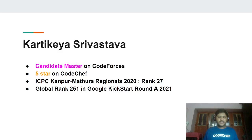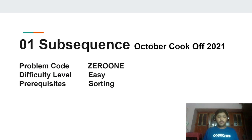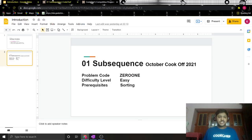Hello everyone, this is Karthikish Ravastav. I am a Candidate Master on Codeforces, 5 star on CodeChef, ICPC Kanpur Mathura Regionals 2020 Rank 27, Global Rank 251 in Google Kickstart Round D 2021. Today I am going to discuss the problem '01 Subsequences' which came in October Cook-Off 2021. The difficulty level is easy and the prerequisite is sorting. Now let's move on to the problem statement.